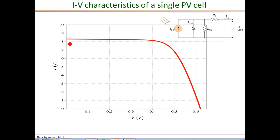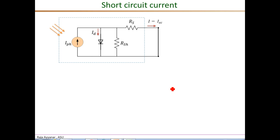The current starts at its maximum value at zero voltage and remains fairly constant at low voltages. Beyond about 0.45 V for this particular cell, it drops rapidly and reaches zero at the open circuit voltage. We are interested in maximum power from the PV cell, which occurs somewhere in the region where both current and voltage are high. Many maximum power point tracking (MPPT) algorithms, to be studied in later videos, operate exactly at the point where the product of voltage and current is maximum.